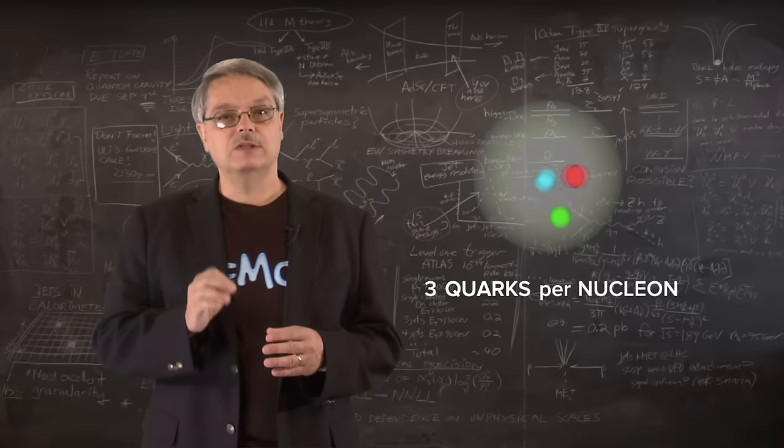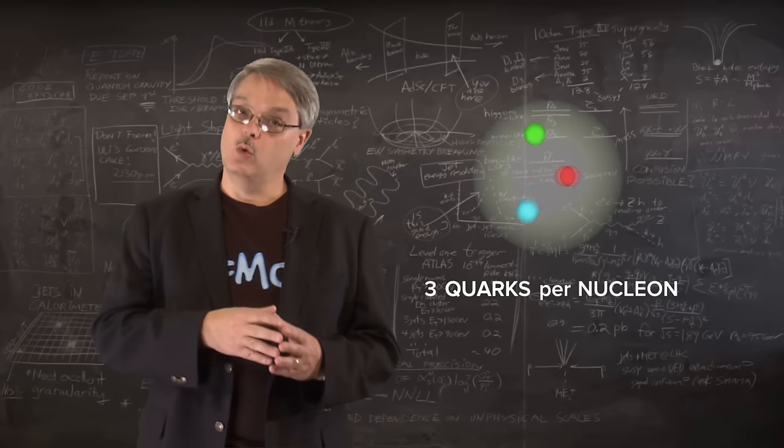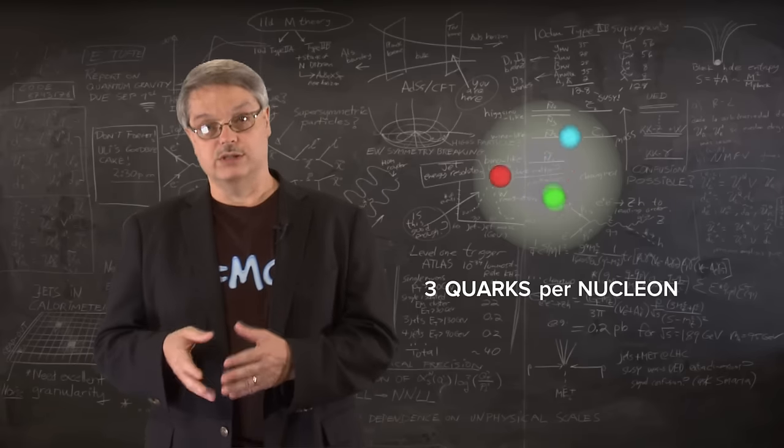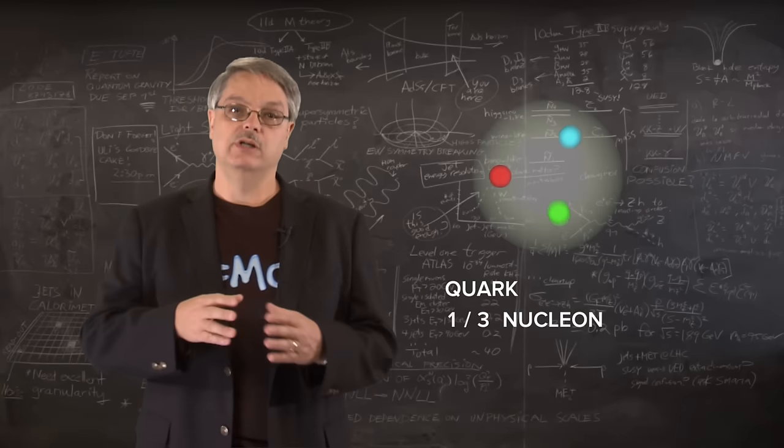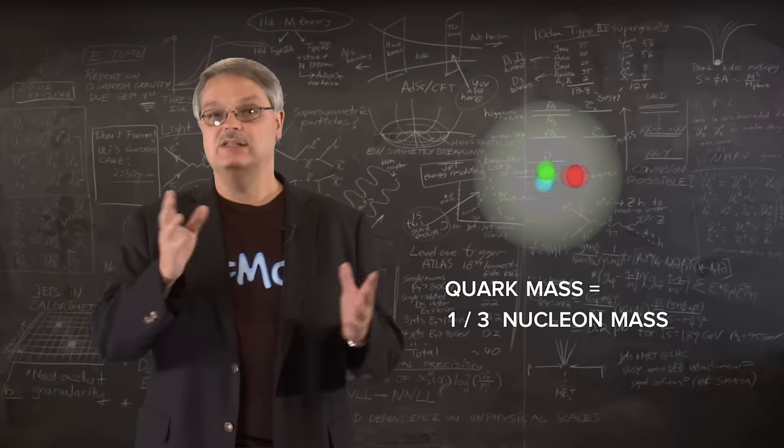So, it stands to reason that the ultimate origin of your mass is the quarks. And since there are three quarks in each nucleon, each quark carries about a third of the nucleon's mass. And that's the final word.